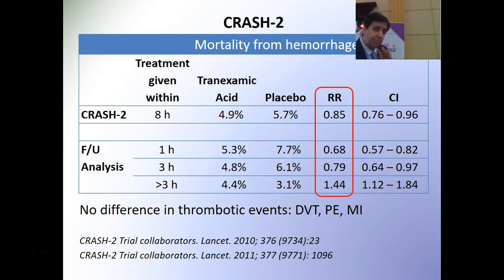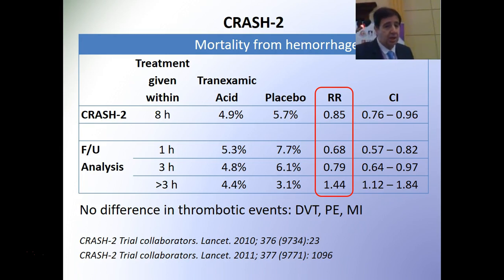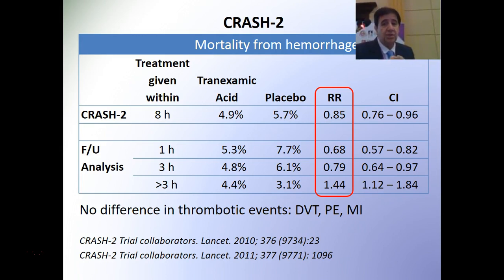An important finding from the CRASH-2 study: although it showed tranexamic acid worked in controlling hemorrhage, there was no difference in thrombotic events — whether DVTs, pulmonary embolisms, or myocardial infarctions. This study was published around 2010–2011.